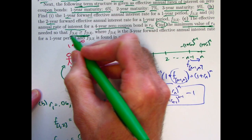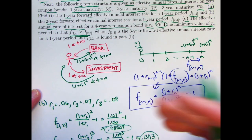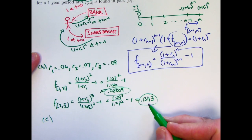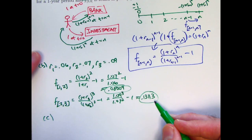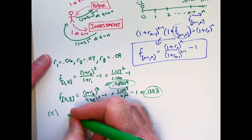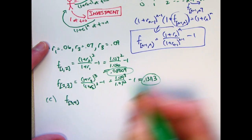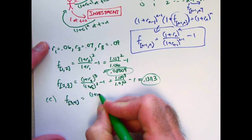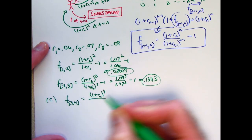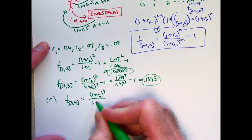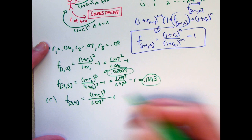Find the minimum value of r4. r4 is unspecified. So, if this is true, we just found that quantity to be about 0.13113. What is f3, 4 going to be? Once again, we use this formula. That's 1 plus r4 to the fourth power divided by 1 plus r3 cubed, which will be 1.09 cubed minus one.